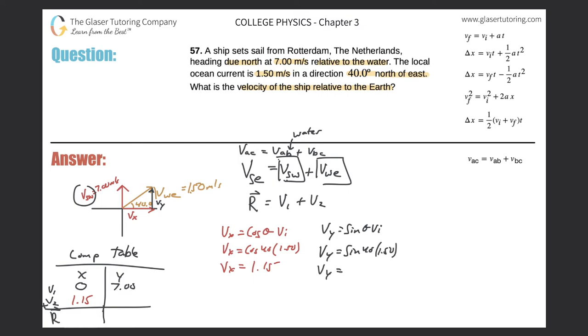And again, just simply plug it into the calculator. So sine of 40 times 1.5. Then we get a value of 0.964. Plug that into the table. Great. Now just add them all up. So this will be 1.15. Now the y should be 7.96. I got to cut the four off because of significant figures. So now here's my resultant.